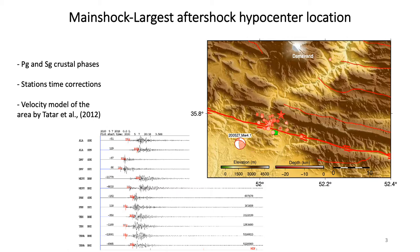In the first step we computed the hypocenters of the main shock and largest aftershock by visually reading the crustal phases recorded by the Iranian seismological center network, applying time corrections at stations, and using the velocity model of the area obtained by Tatar and colleagues in 2012. We computed that the hypocenter of the aftershock is almost five kilometers southwest of the main shock.